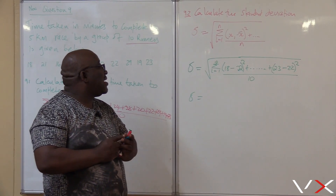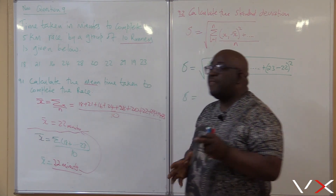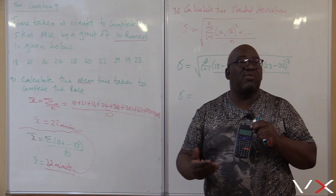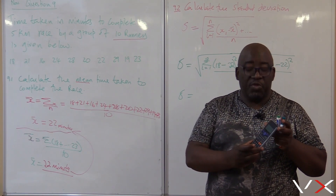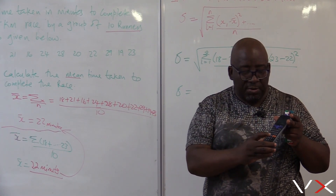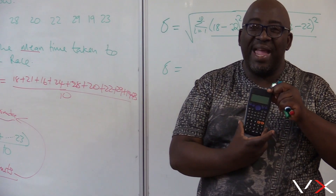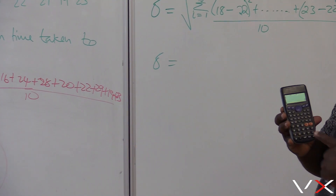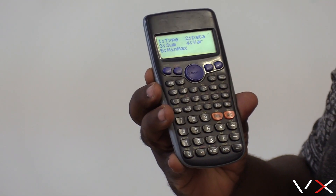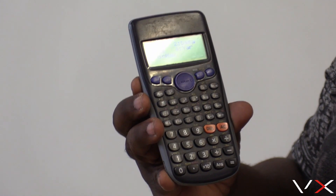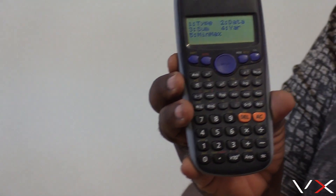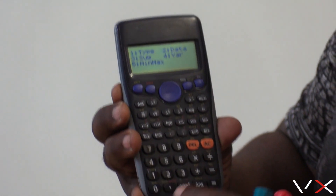I'm skipping the manual calculation to save time and using the calculator instead. The data is already stored, so do not press ON. Press AC. Then press Shift, go to Stats — number one. Go to VAR, which is number four.